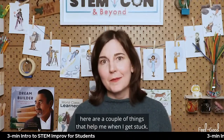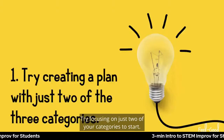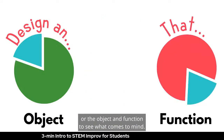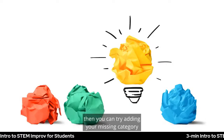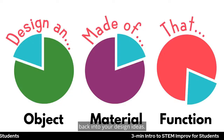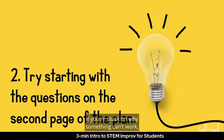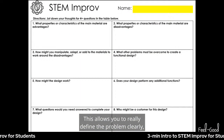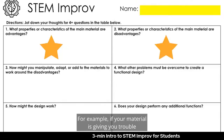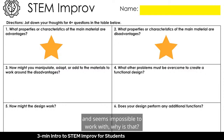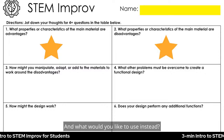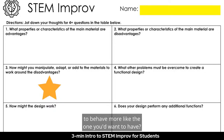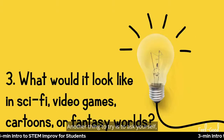If you feel like you don't have any good ideas, here are a couple of things that help me when I get stuck. Try focusing on just two of your categories to start — for example, the object and material, or the object and function — to see what comes to mind. Once you unlock the first step, then you can add your missing category back into your design ideas. If you're stuck on why something can't work, try starting with the handout questions before your design, to really define the problem clearly. If your material seems impossible to work with, ask yourself why — and what you'd like to use instead, and how you might adapt the material you chose to behave more like the one you'd want.